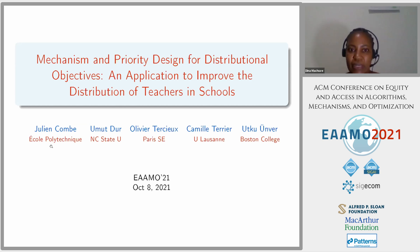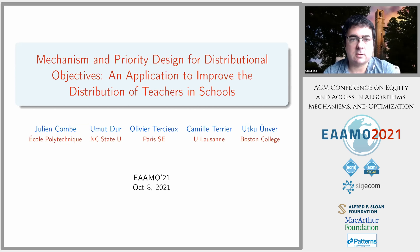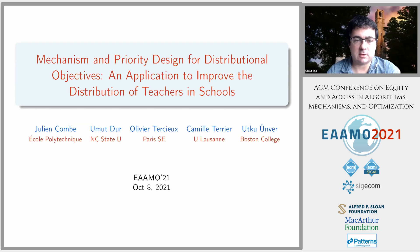The second paper is on mechanism and priority design for distributional objectives, with an application to improve the distribution of teachers in schools. We have three of the co-authors here. The title is slightly different but this is the same paper. Utku and Julian are here; the other co-authors are Olivier and Camille.